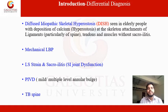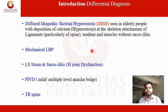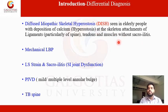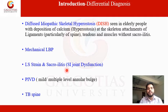The first differential diagnosis is Diffuse Idiopathic Skeletal Hyperostosis, also known as DISH. It is seen in elderly people with deposition of calcium at the skeletal attachment of ligaments, particularly of the spine, tendons, and muscles, without sacroiliitis. DISH means deposition of calcium at the site of enthesis — where your ligaments, tendons, and muscles originate. It mimics mechanical low back pain, lumbosacral strain, sacroiliitis, and PIVD (prolapsed intervertebral disc).